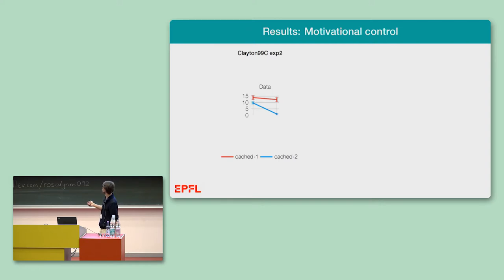With this simple model we can capture, for example, the main effects seen in this experiment here. Details don't matter. What I want you to focus on instead is just that the red line basically stays constant, the blue line goes down a little bit for this experiment.